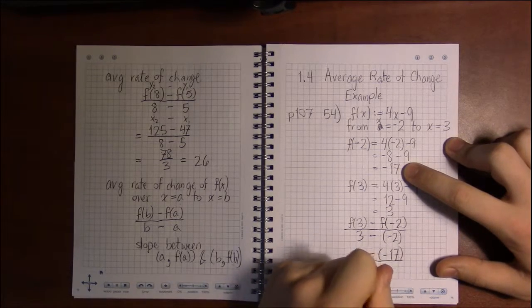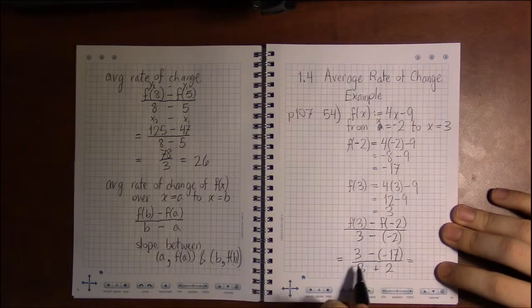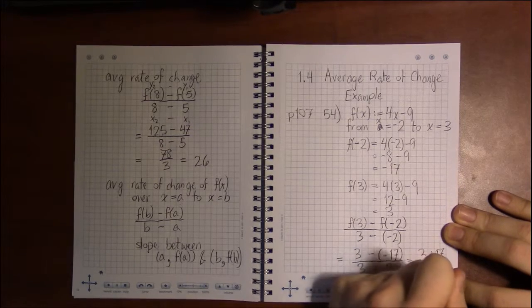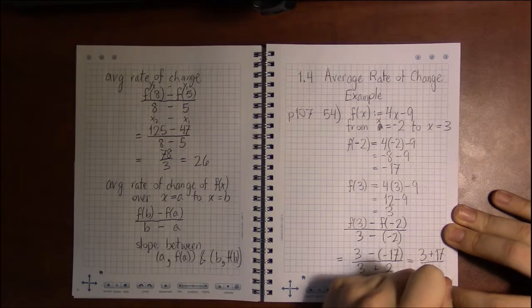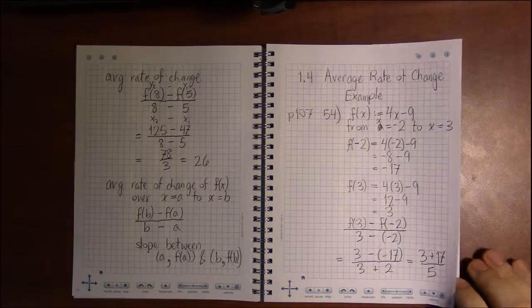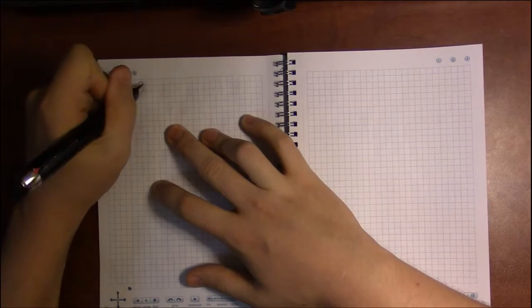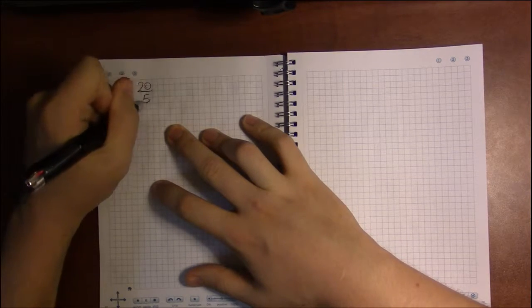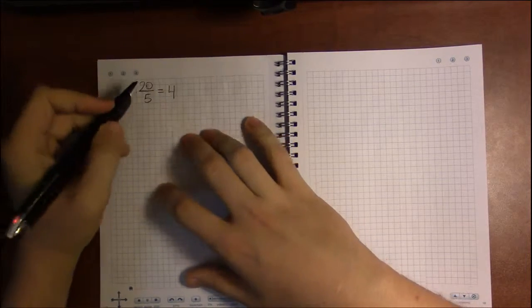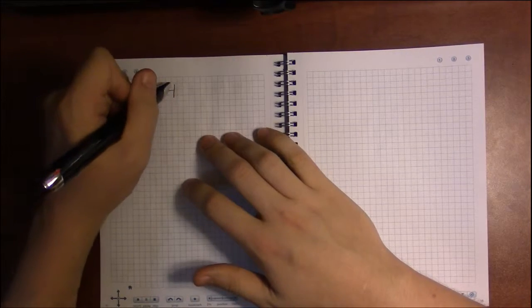Minus minus is just plus. So what we have is 3 plus 17 over 3 plus 2 is 5. 3 plus 17 is 20, so we have 20 over 5, and that's just 4. So we have a slope of 4 as our average rate of change.